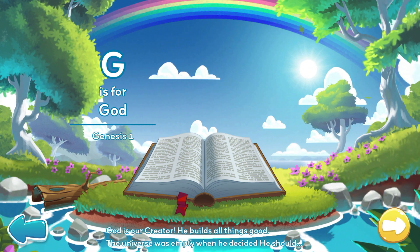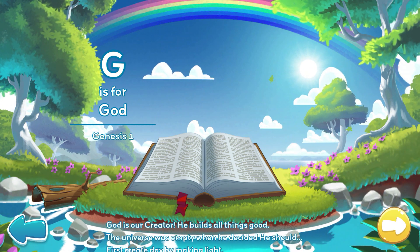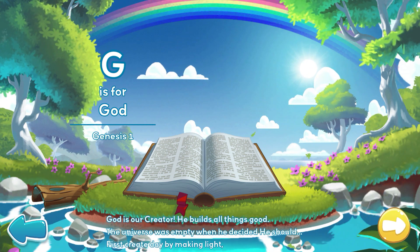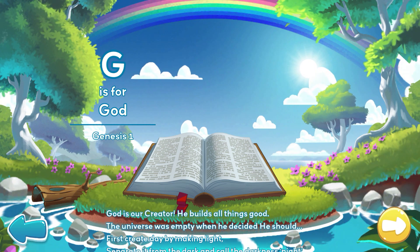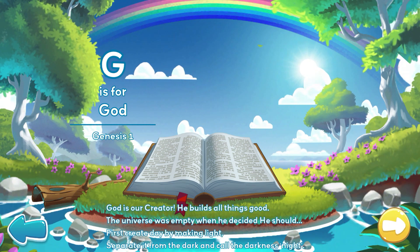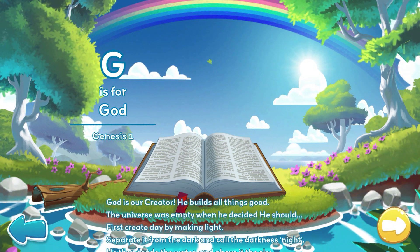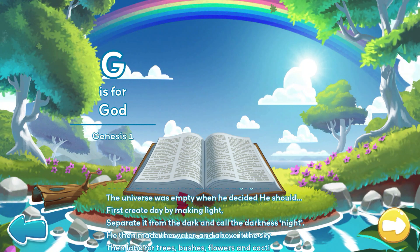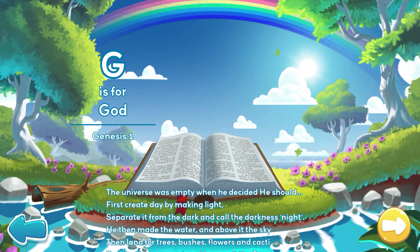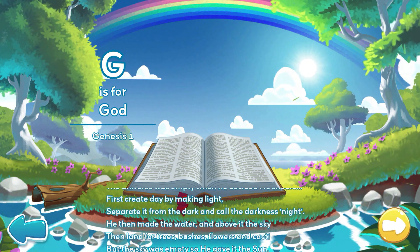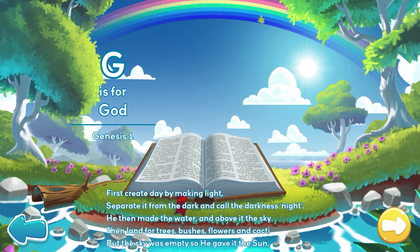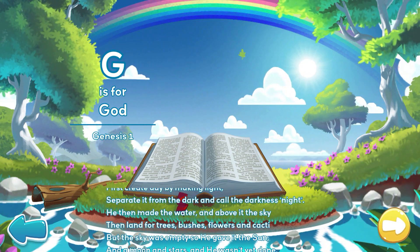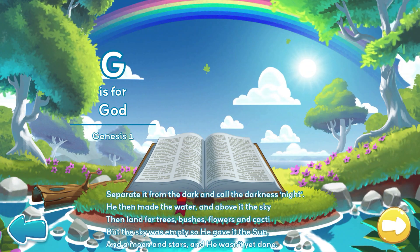The universe was empty when he decided he should first create day by making light. Separate it from the dark and call the darkness night. He then made the water and above it the sky. Then land for trees, bushes, flowers, and cacti.